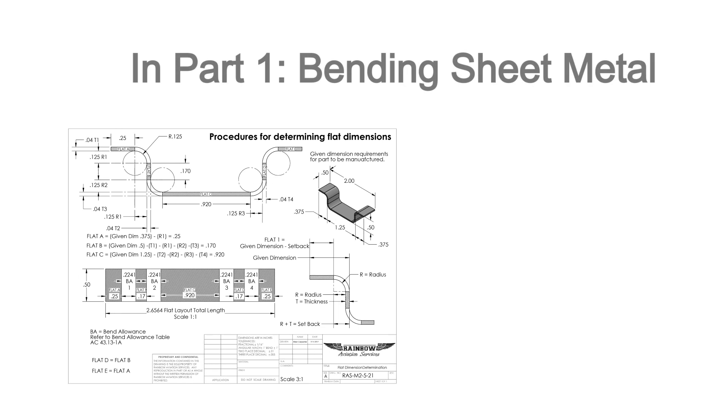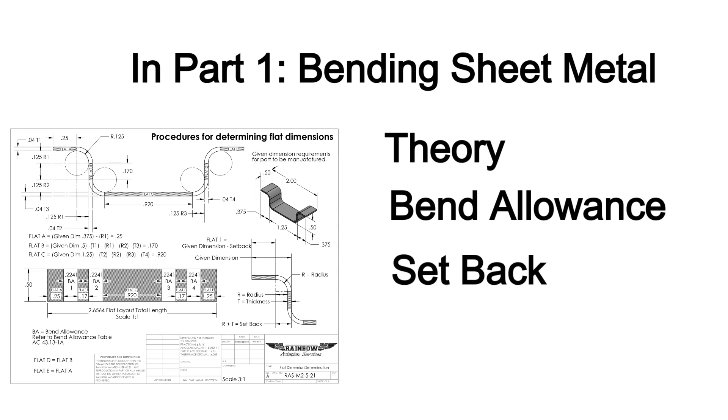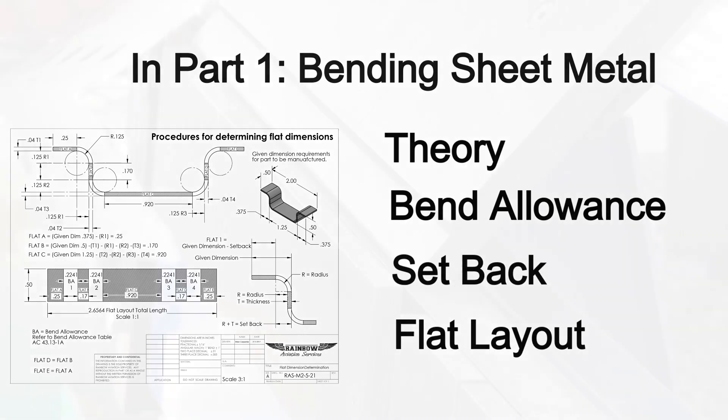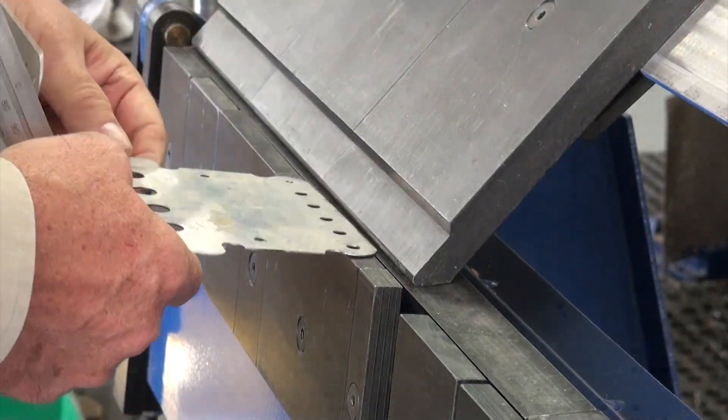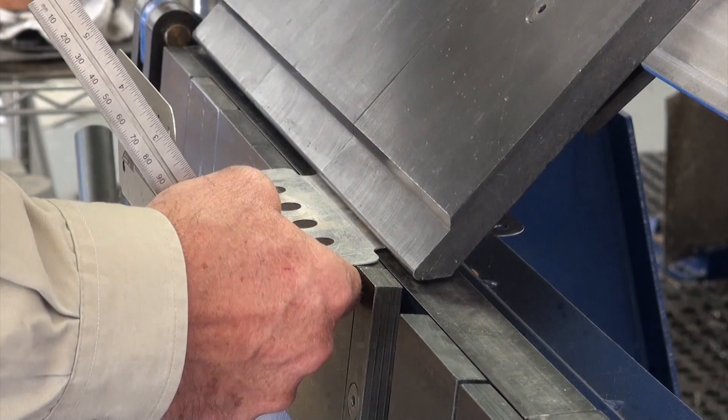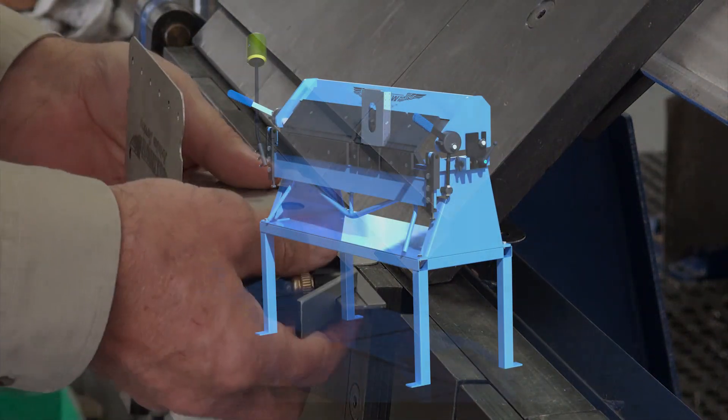In part one of this video, we discussed in depth the theory and the process for developing a flat layout for manufacturing a sheet metal part. In this video, we will take it to the next step: the practical process of converting the flat layout to a bent sheet metal part.